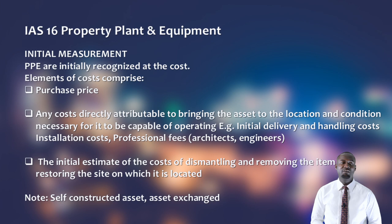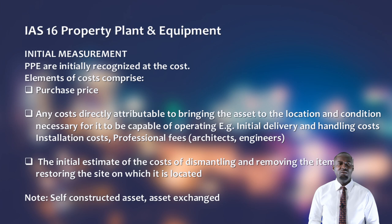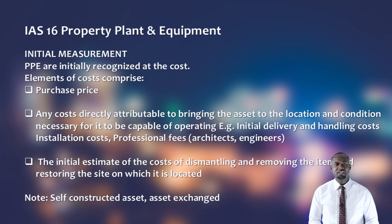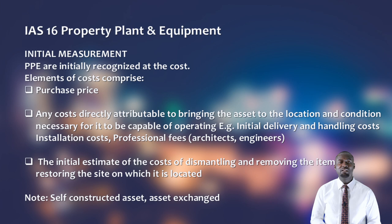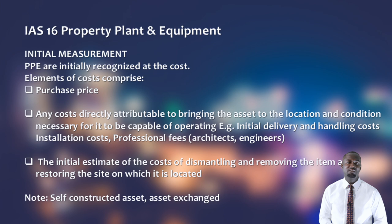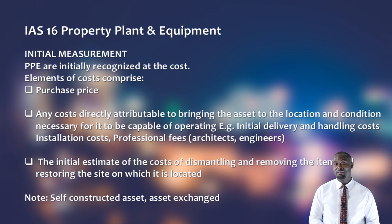For the initial measurement of a PPE, we look at various elements of cost. The cost comprises: number one, the purchase price at which the asset was acquired, less discount, plus all non-refundable taxes. Then all directly attributable costs of bringing the asset to its intended use. And finally, the initial estimate of all costs to be incurred in dismantling and removing the asset from the site — some call it the restoration cost or the dismantling cost.